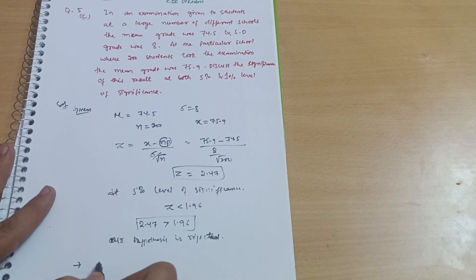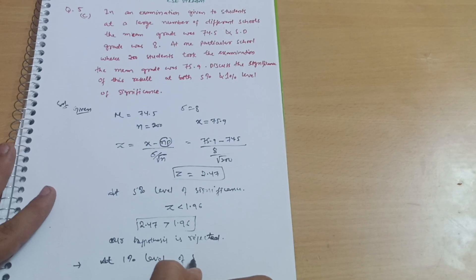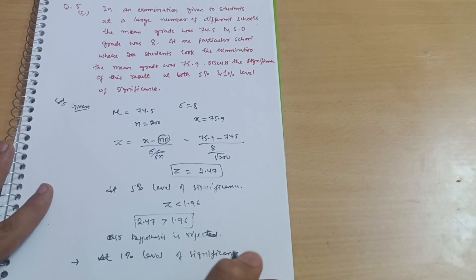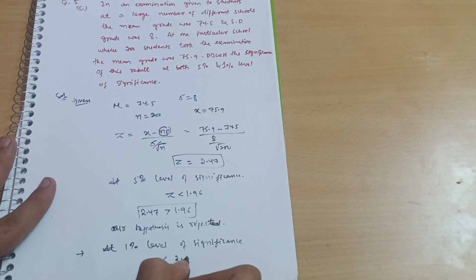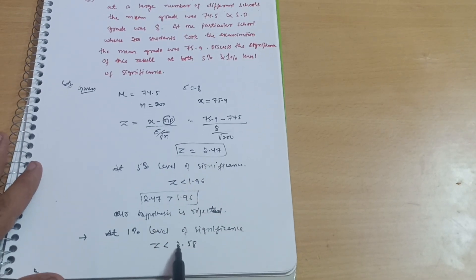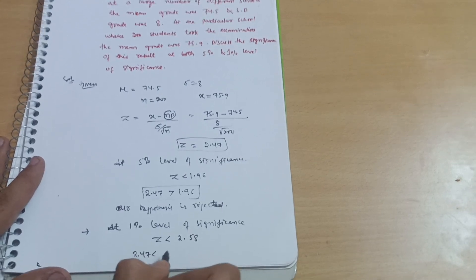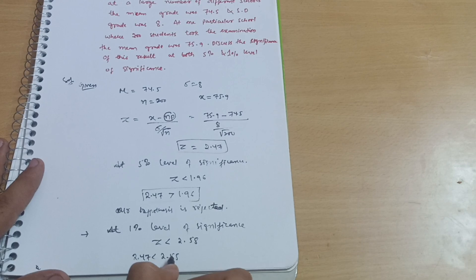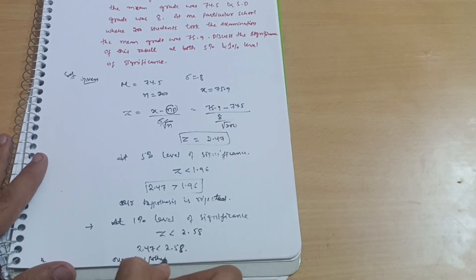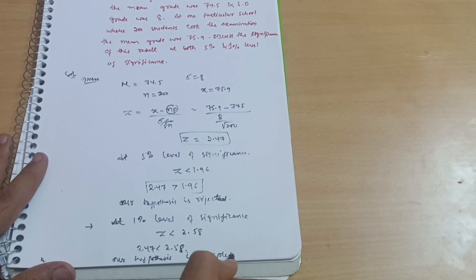At 1% level of significance, z should be less than 2.58. Here, z is 2.47, which is obviously less than 2.58. So the condition is satisfied, and our hypothesis is accepted.